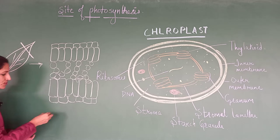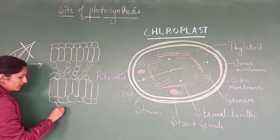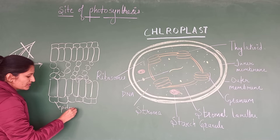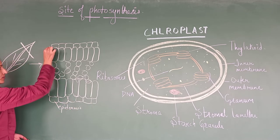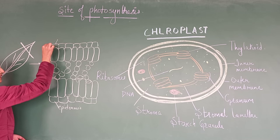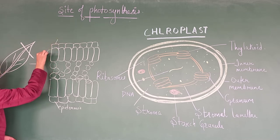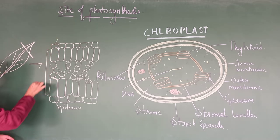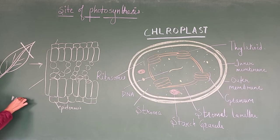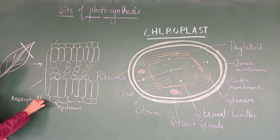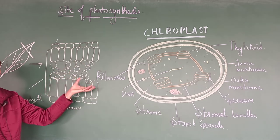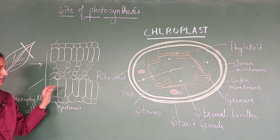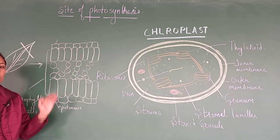So, mesophyll cells — this is the epidermis which bears the stomata, and in between, this is also epidermis. And over here, this particular part is mesophyll cells. Mesophyll cells are of different types like palisade mesophyll and spongy mesophyll.